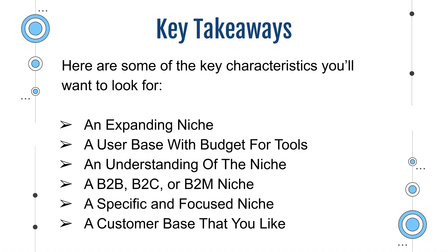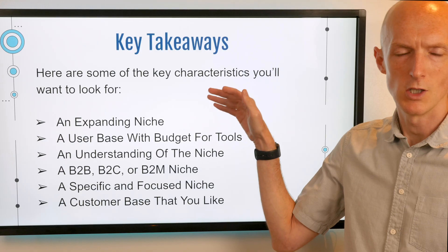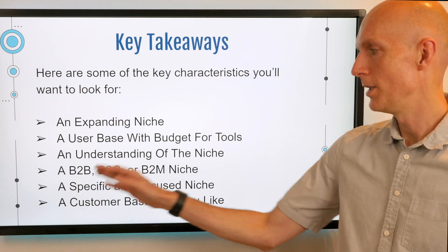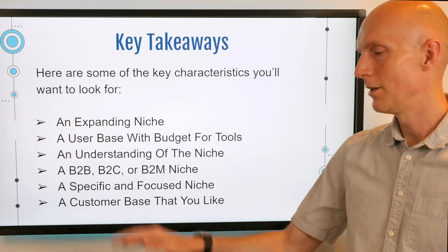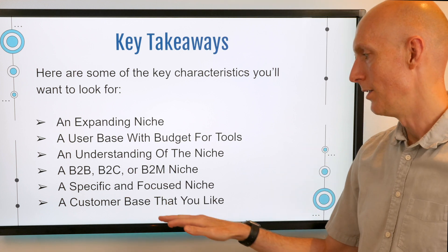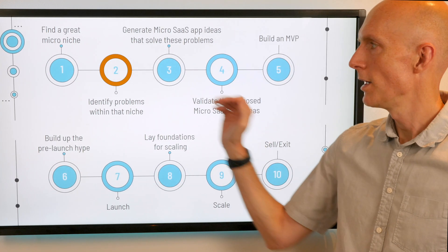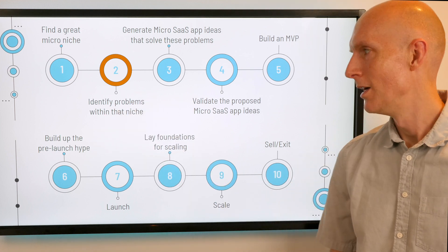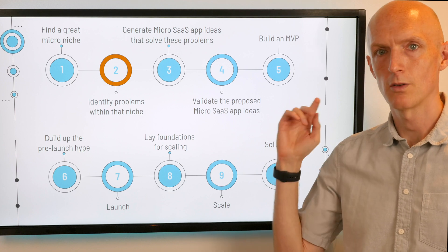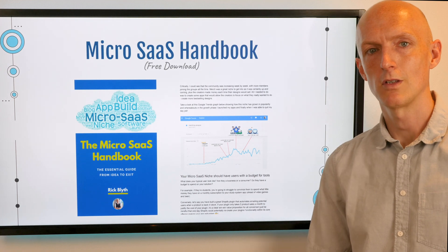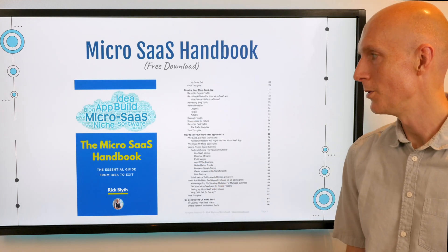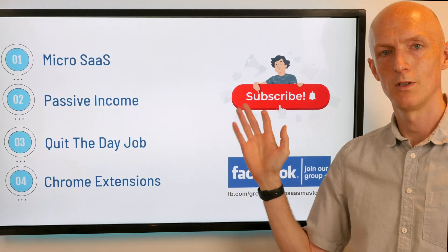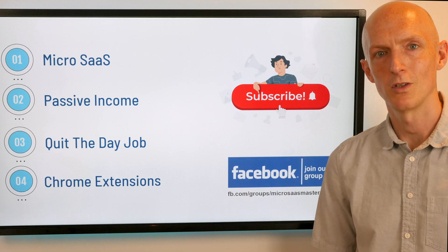Key takeaways: we looked at the key characteristics of a micro SaaS niche — the niche should be expanding, users should have a budget for tools, you should have at least a basic understanding of the niche, you need to decide between B2B, B2C, or a hybrid, it should be a specific and focused niche rather than a generic one, and you should ideally like your customer base. That was step one. The next video will cover identifying problems within your chosen niche. If you haven't seen the 10-step overview video, I'll link to it now and in the description below. Don't forget the micro SaaS handbook — completely free to download, 12 chapters covering everything from zero all the way through to an exit. If you like what you see, please like, subscribe, and join our Facebook group. Thanks for watching — see you in the next video!